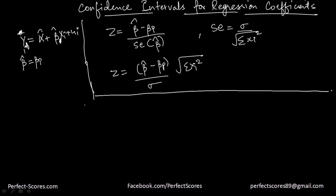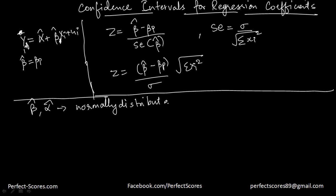Why have we done this? From the normality assumption video, our OLS estimators — beta hat and alpha hat — are normally distributed. Since they're normally distributed, we know their means and variances — we know everything about them. So we can actually use their probability distribution to construct a probability distribution for beta population.